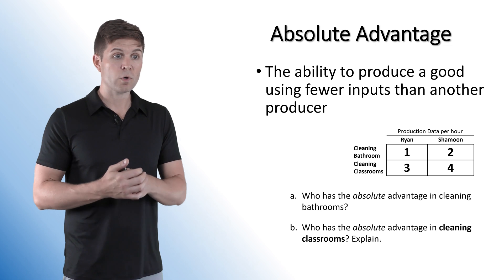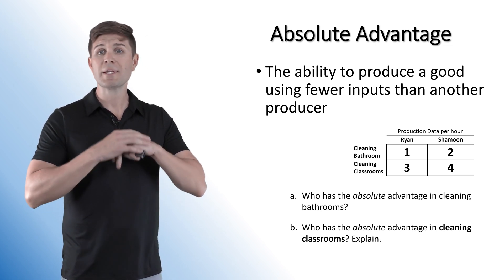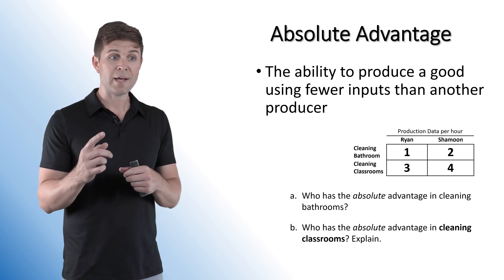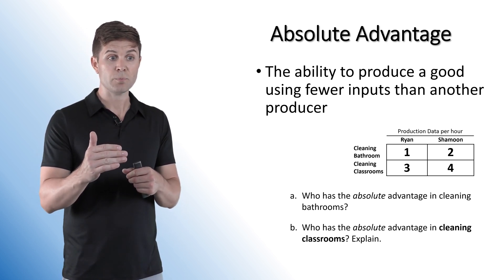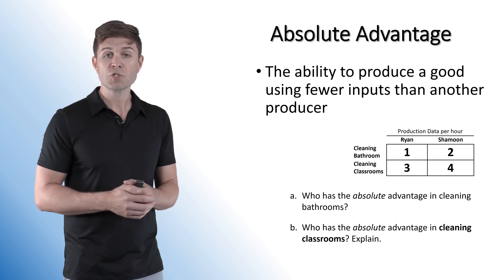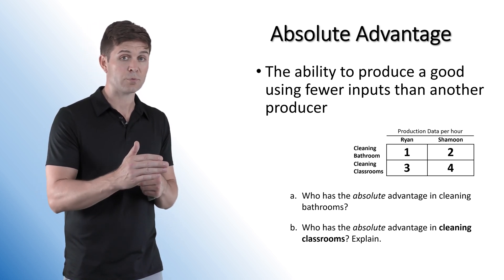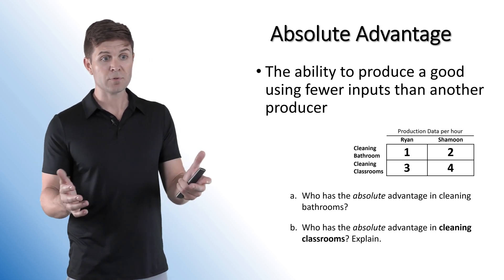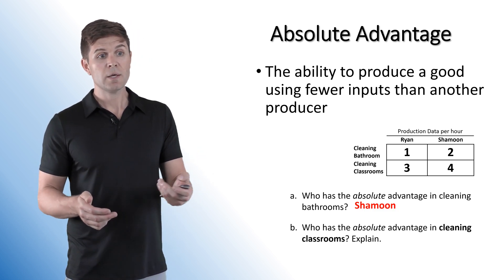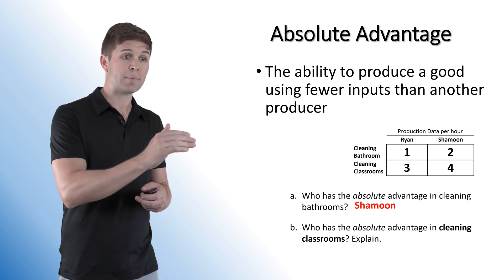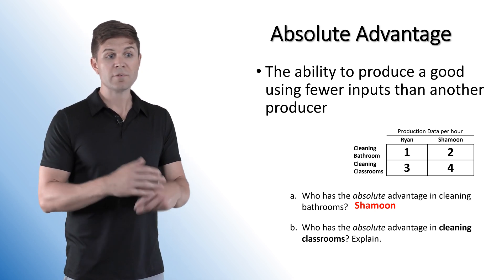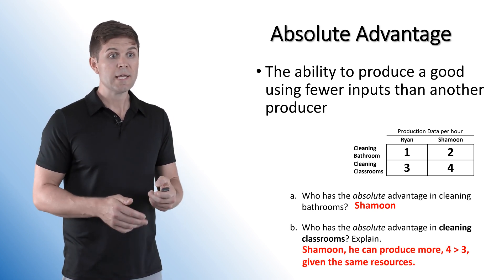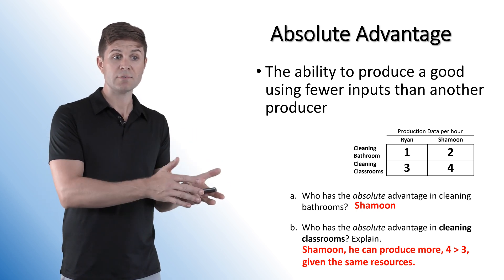In the example on the worksheet, we have Ryan and Shamoon completing janitorial tasks — cleaning bathrooms and cleaning classrooms. In one hour, Ryan can clean one bathroom or three classrooms. Shamoon in one hour can clean two bathrooms or four classrooms. Shamoon has the absolute advantage in cleaning bathrooms — he can do two in the same time it takes Ryan to do one. Shamoon also has the absolute advantage in cleaning classrooms — he can clean four in the time it takes Ryan to clean three.